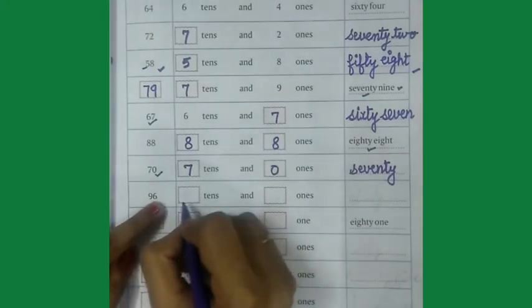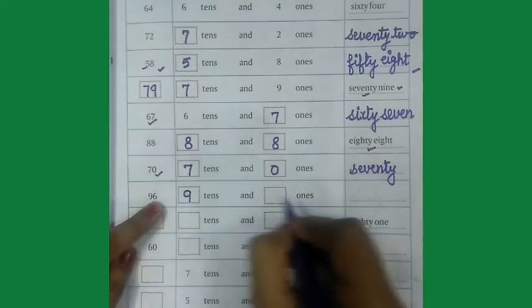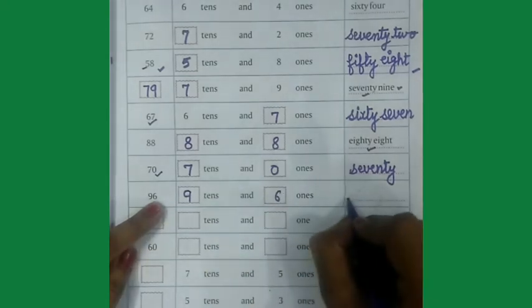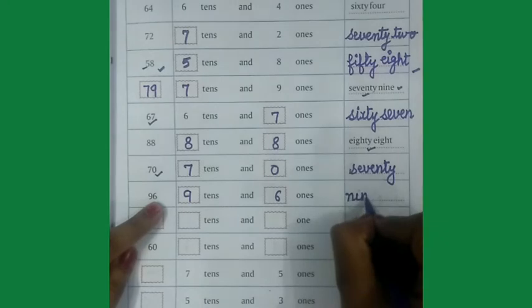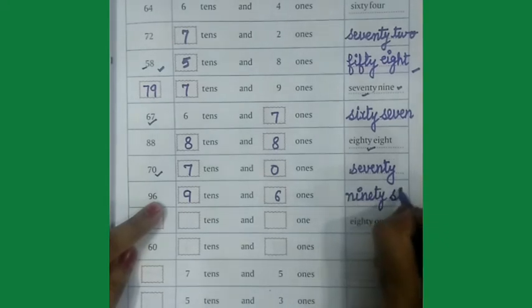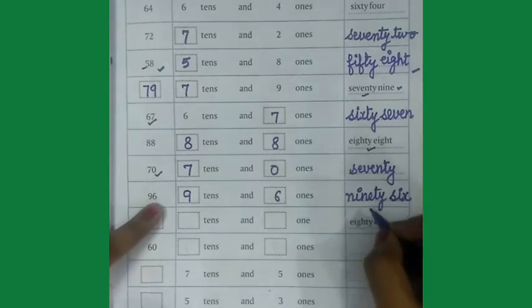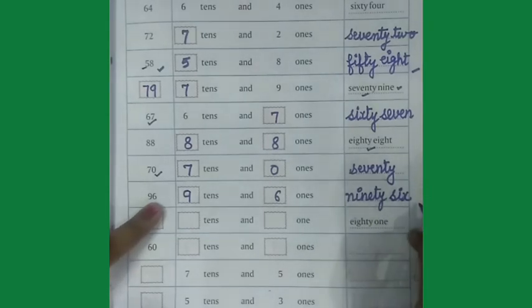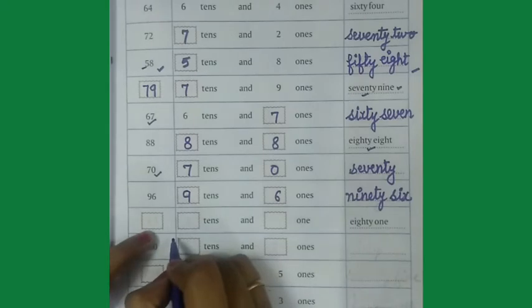Come on next one, 96, so I will write 9 tens, 6 ones and N-I-N-E-T-Y-90-S-I-X-6. Number name is N-I-N-E-T-Y-90-S-I-X-6.